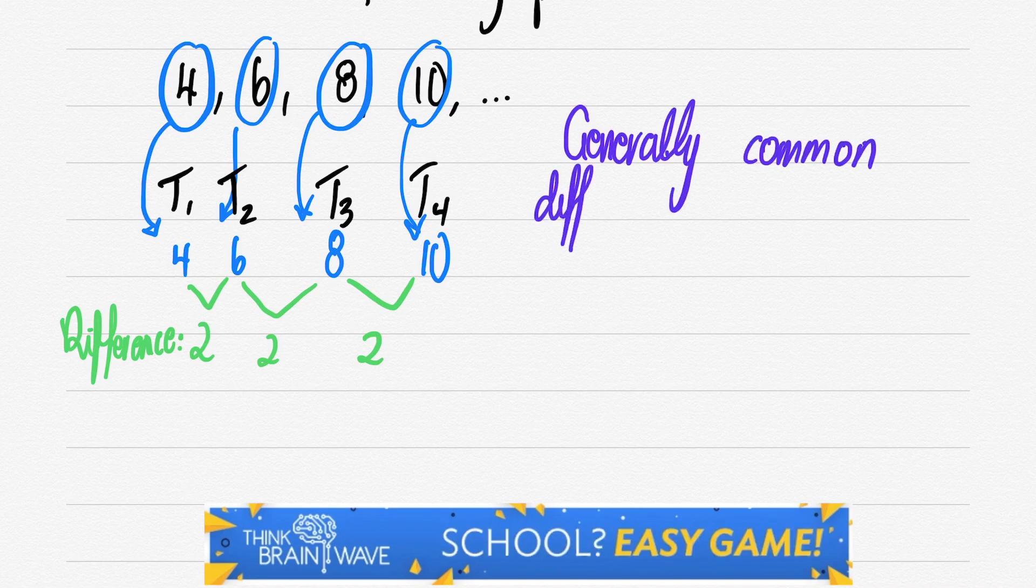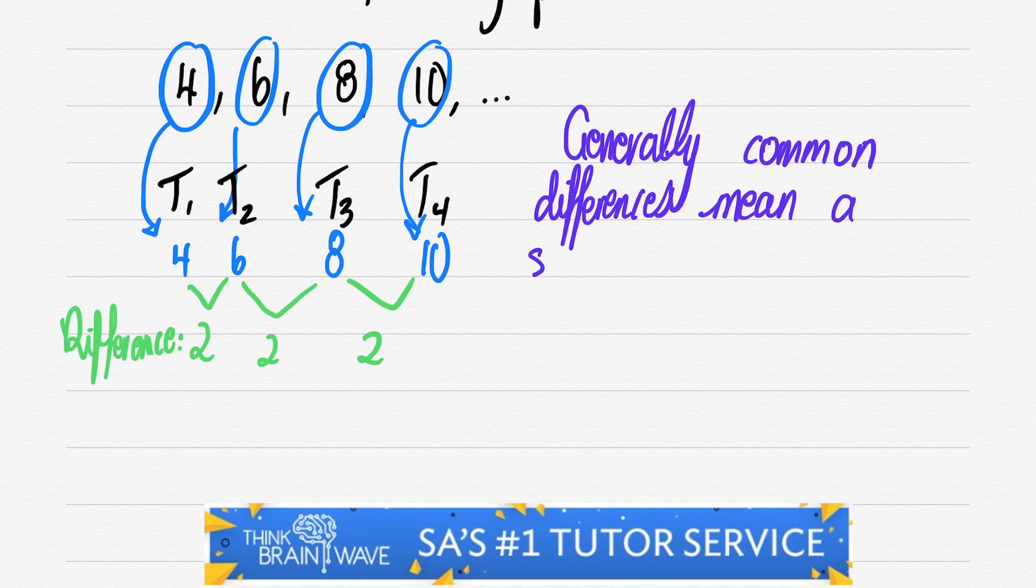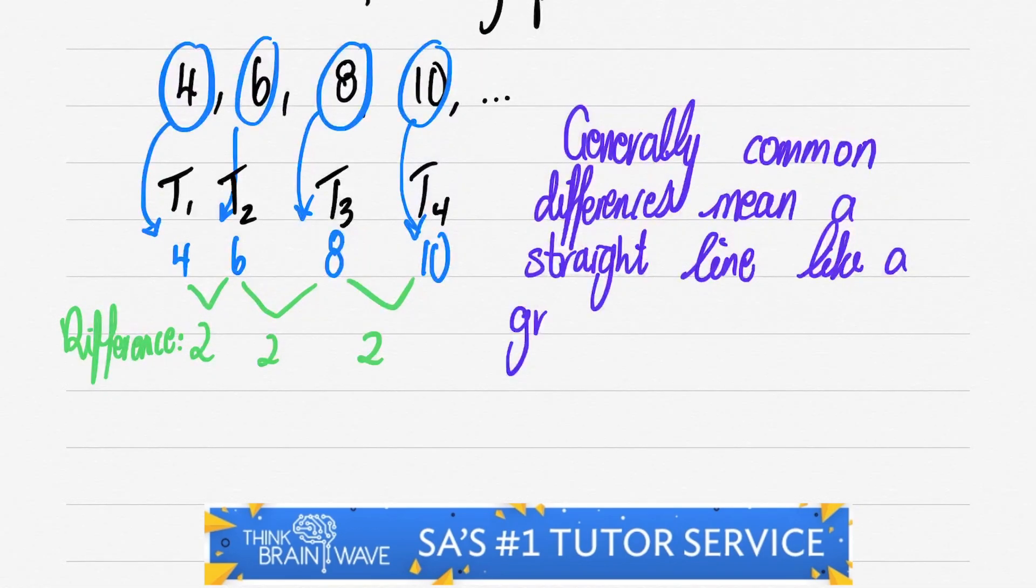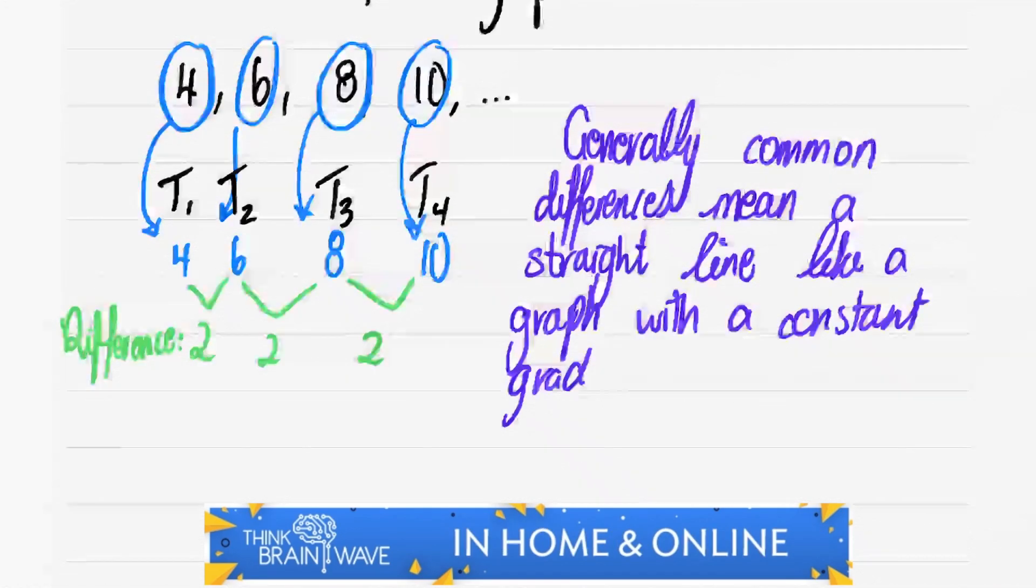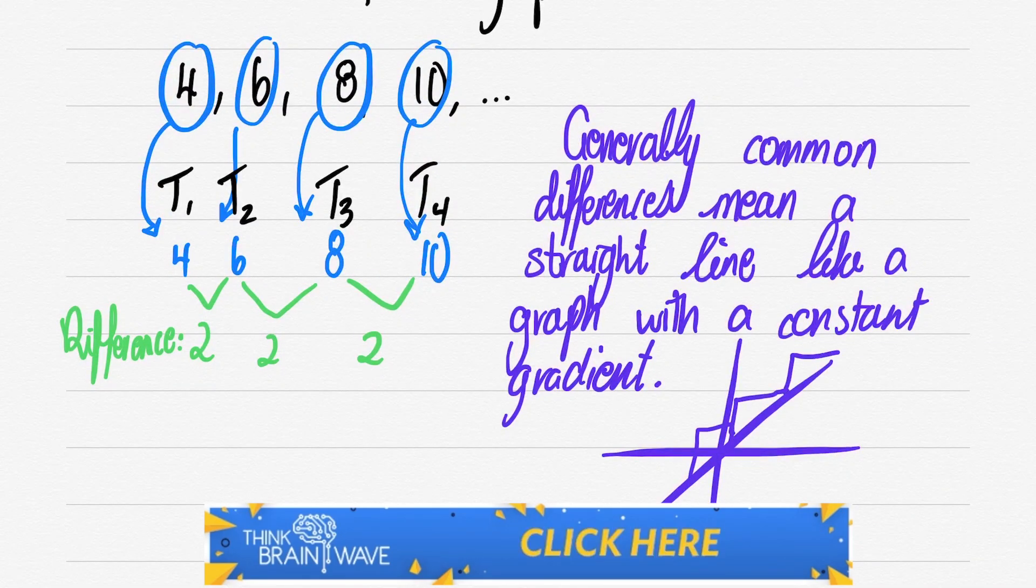So generally common differences mean a straight line relationship like a graph with a constant gradient. Something that looks like that.